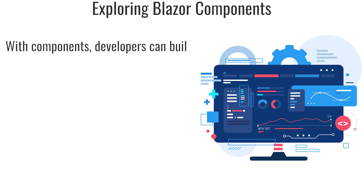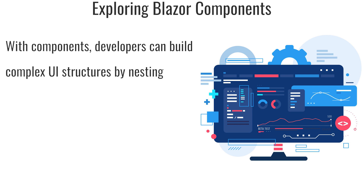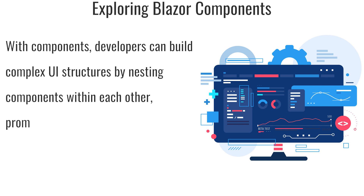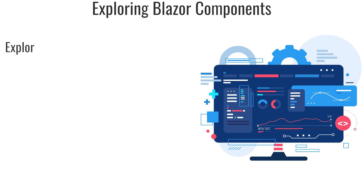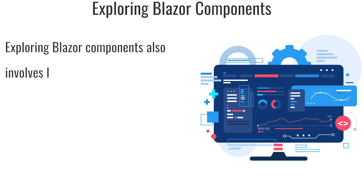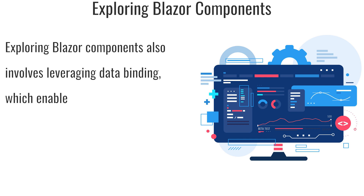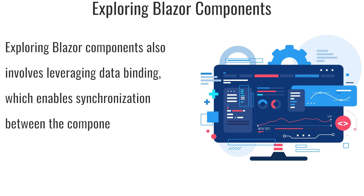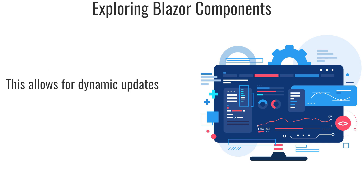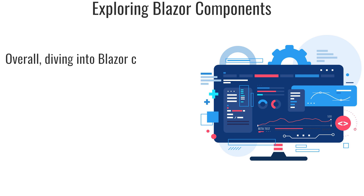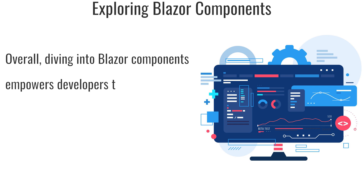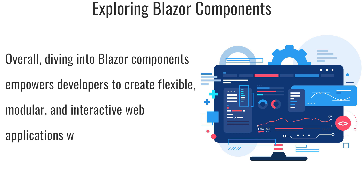With components, developers can build complex UI structures by nesting components within each other, promoting reusability and modular design. Exploring Blazor components also involves leveraging data binding, which enables synchronization between the component's state and the UI elements. This allows for dynamic updates and a responsive user experience. Overall, diving into Blazor components empowers developers to create flexible, modular, and interactive web applications with ease.